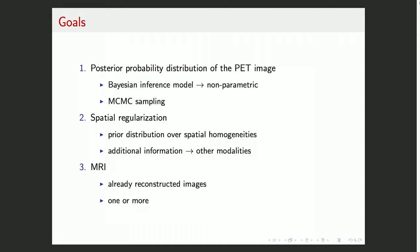For spatial regularization, we use a different prior distribution over possible spatial homogeneities in the image. For this, we need some additional information that usually comes from other modalities, here from the MRI. So we use already reconstructed MR images and any number of them.